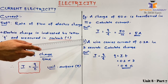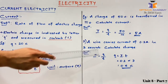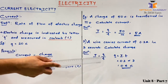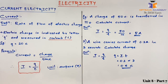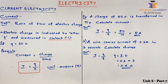The second question says that a wire carries current of 0.2 ampere in 3 seconds — calculate charge. Formula remains the same: I equals to Q upon T, so Q is equal to I into T, that is current into time. Value of current is 0.2 ampere and time is 3 seconds, so 0.2 into 3 is 0.6 coulomb. So here we have understood the definition of current as rate of flow of charge, formula I equals to Q upon T, and unit ampere.